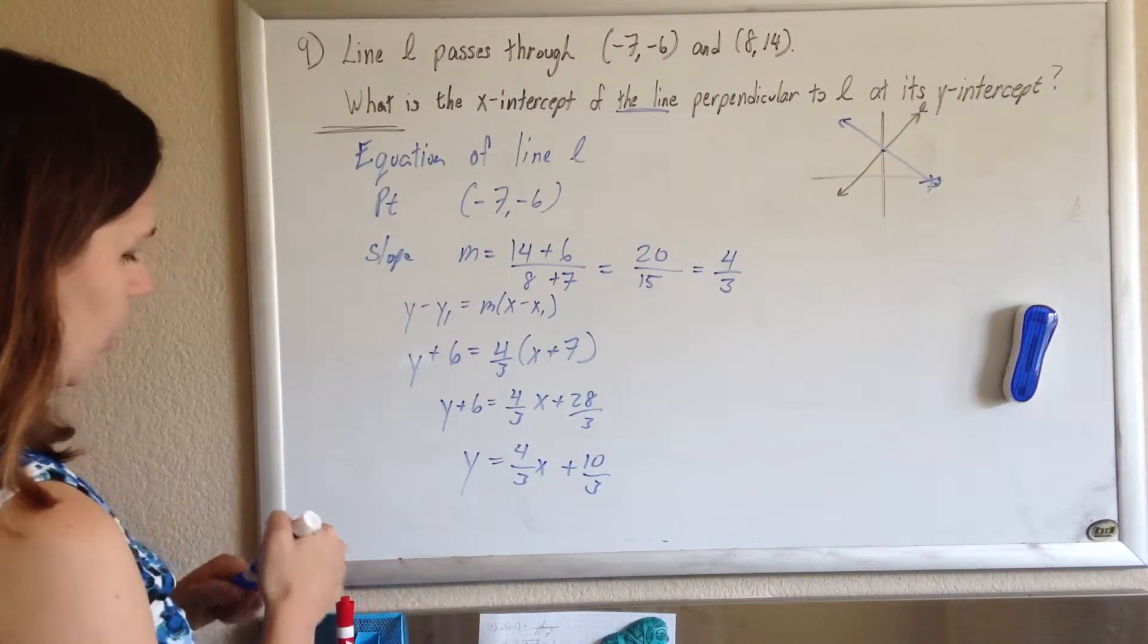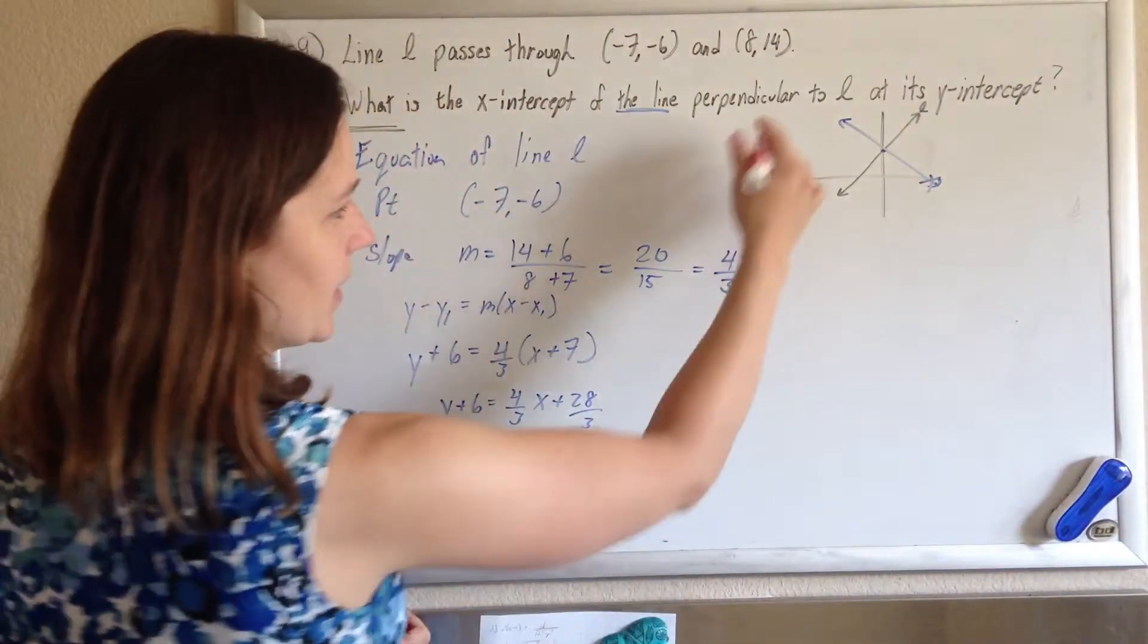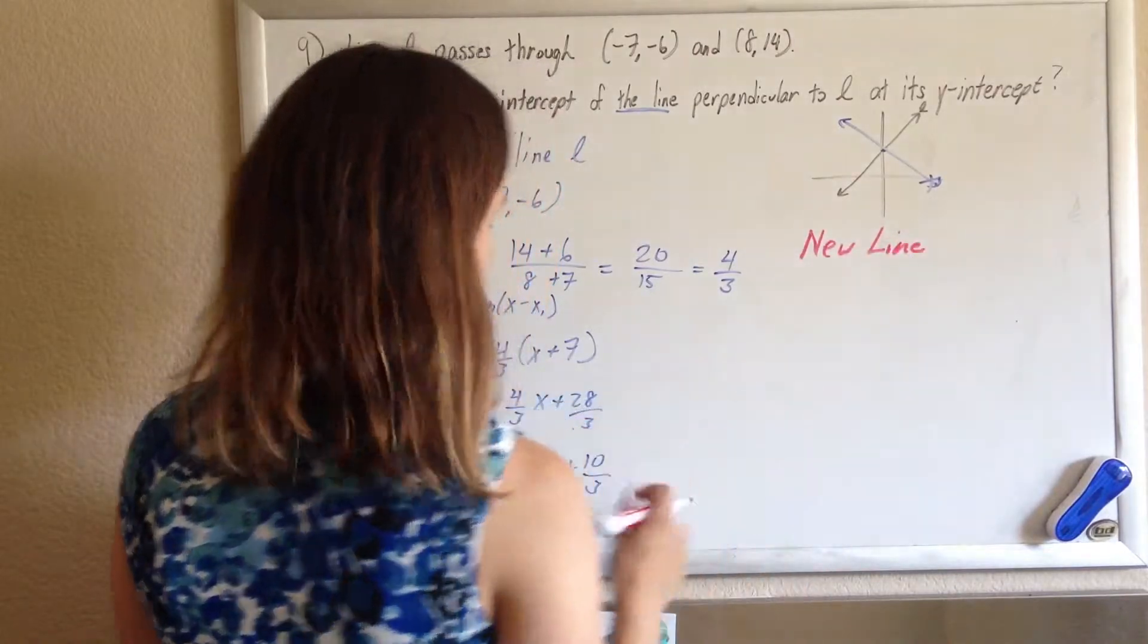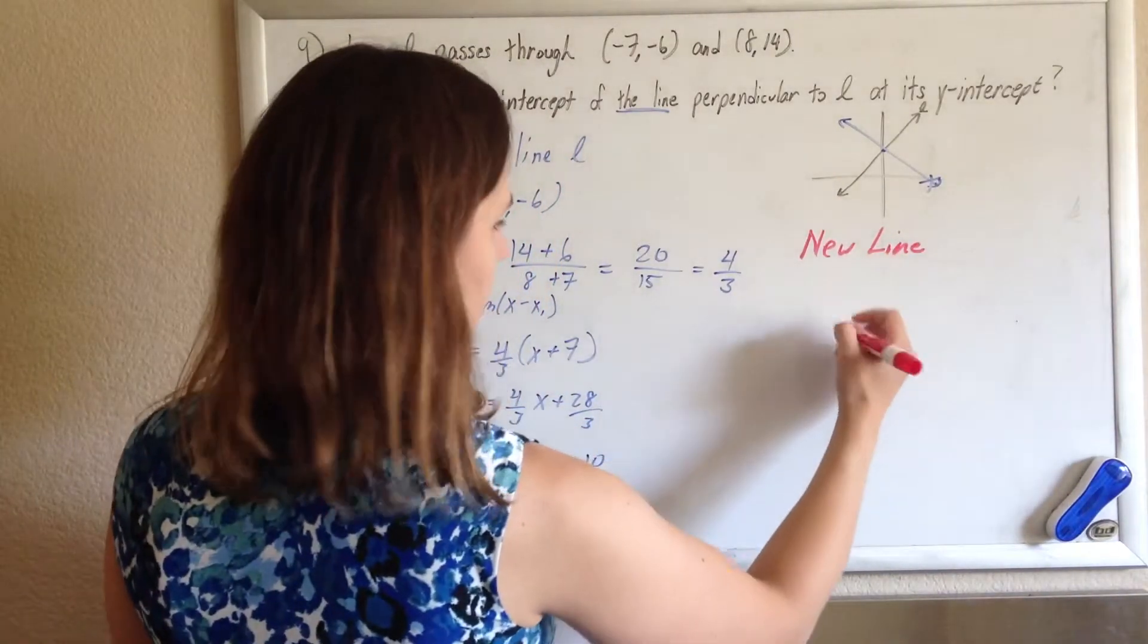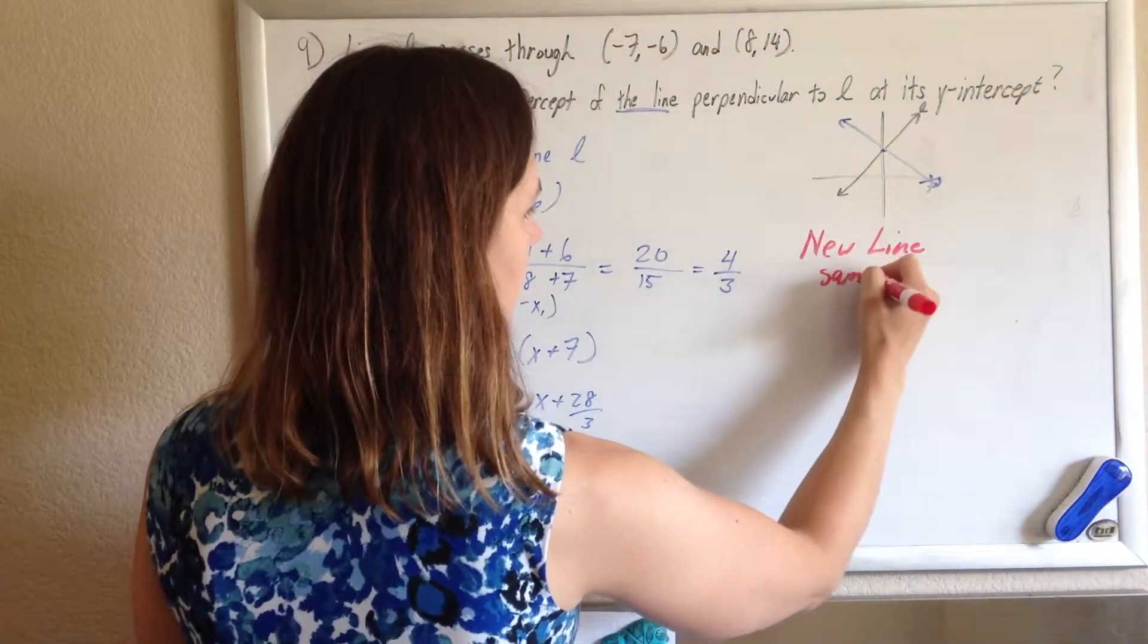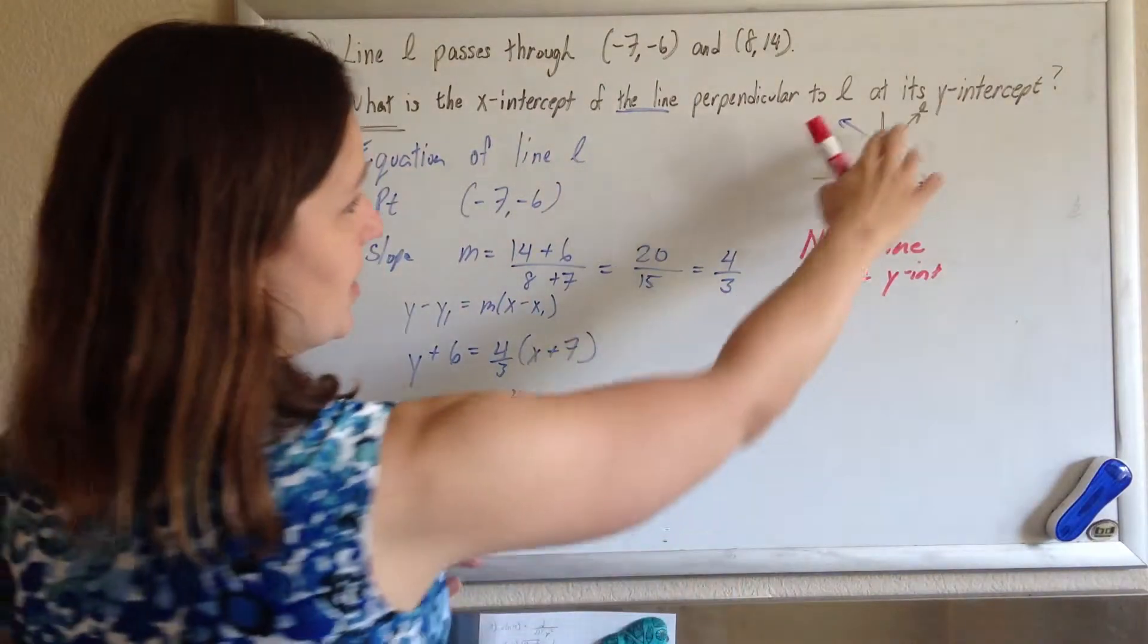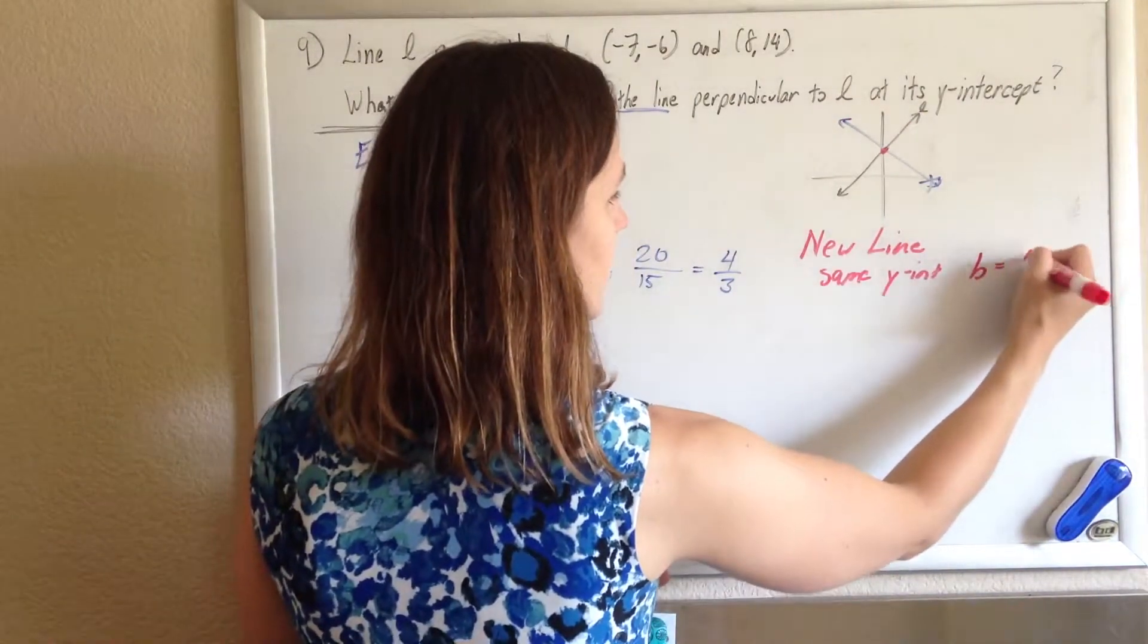That's good, because my new line is based off of that. My new line has the same y-intercept as my old one, because it's at its y-intercept. So the b should be 10 thirds,